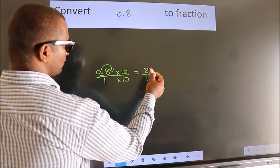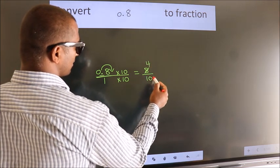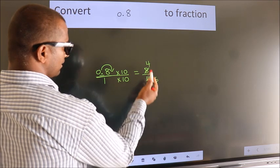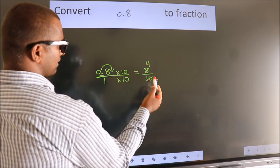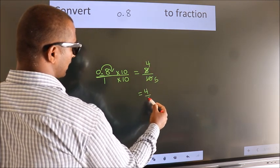Now I cancel with 2. 2 into 8 is 4, 2 into 10 is 5. Cannot be simplified further. So our answer is 4 by 5.